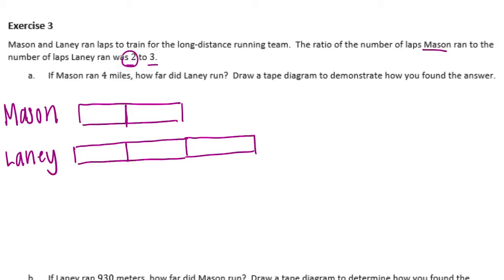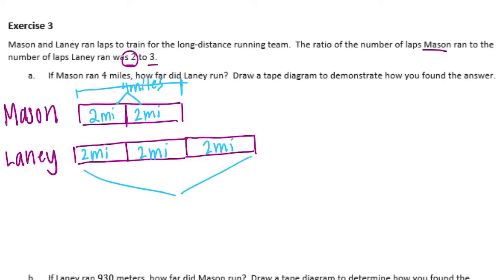Mason is two, Laney is three. Mason ran four miles, so his portion equals four miles total. If we split that evenly into two equal pieces, each piece is two miles. We can fill in Laney's tape diagram: two miles, two miles, and two miles. Adding those up, Laney ran six miles. Our ratio of two to three gives us the equivalent ratio four to six — we multiplied each number by two.